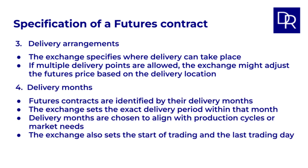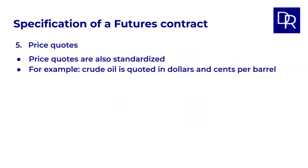Futures contracts are identified by their delivery months, like February crude oil futures or December gold futures. The exchange sets the exact delivery period within that month. Delivery months are chosen to align with production cycles or market needs — for example, agricultural futures often have delivery months around harvest times. Contracts will be trading for the nearby delivery months and some further out months. The exchange also sets the start of trading for a new contract month and the last trading day, which is usually shortly before the delivery period begins. Price quotes are also standardized — for example, crude oil is quoted in dollars and cents per barrel, while financial futures might be quoted in index points or percentage points, depending on the asset.